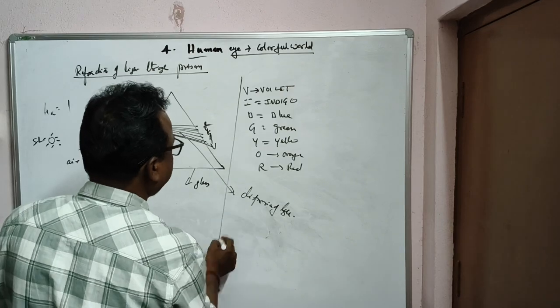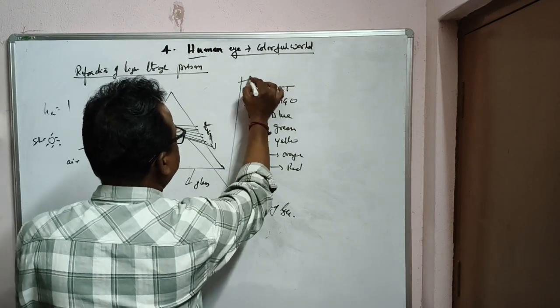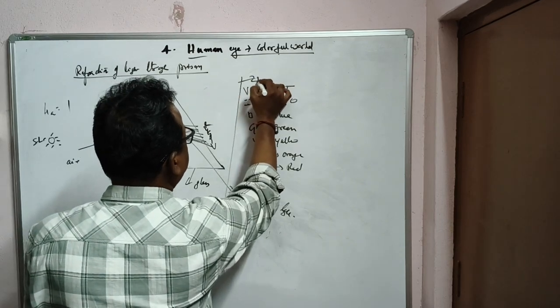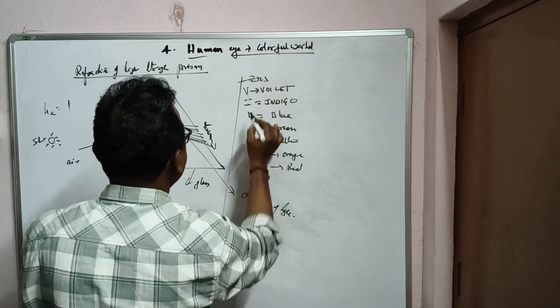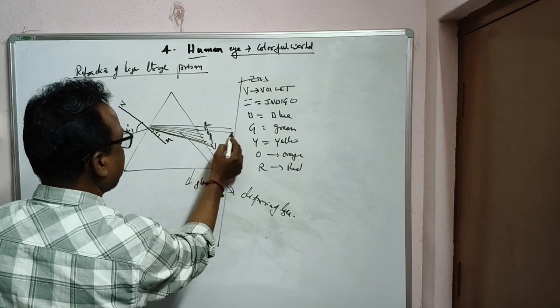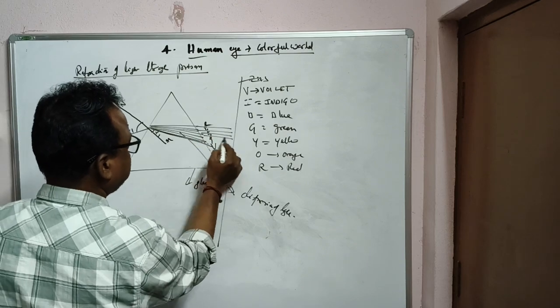If you place a screen such as a zinc sulfide (ZnS) screen, you can observe a spectrum formed by these colors.